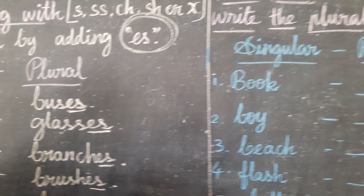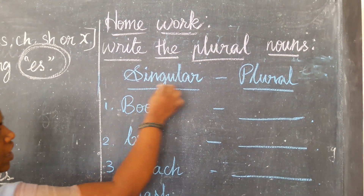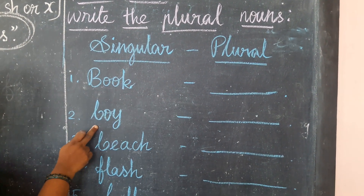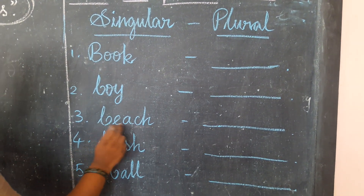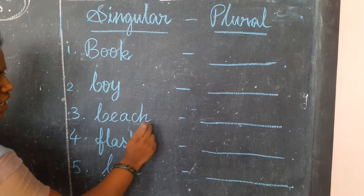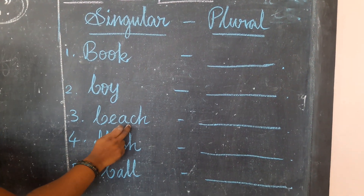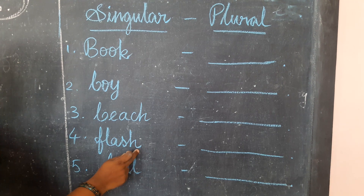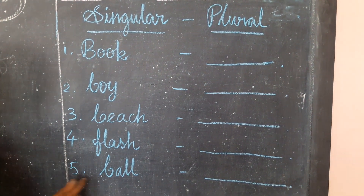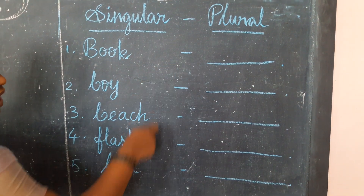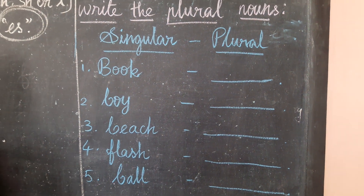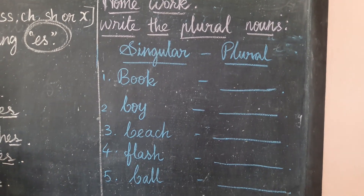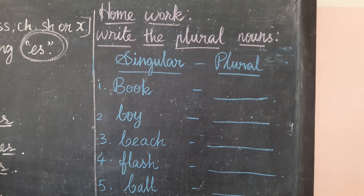Now let's see. Write the plural noun. Singular and plural: book — books. Boy — boys. Beach — end letter is CH, so you join ES. Flash — end letter is SH, so the answer needs ES. Ball — I hope everyone knows the answer. Okay, better write it in your note. In the next class we will see some more rules in singular and plural nouns. Write it in your note. Thank you. Have a nice day.